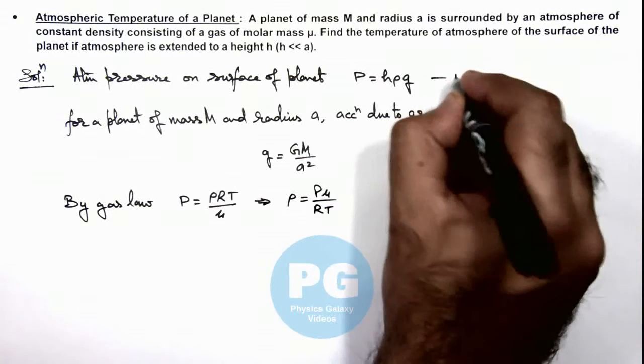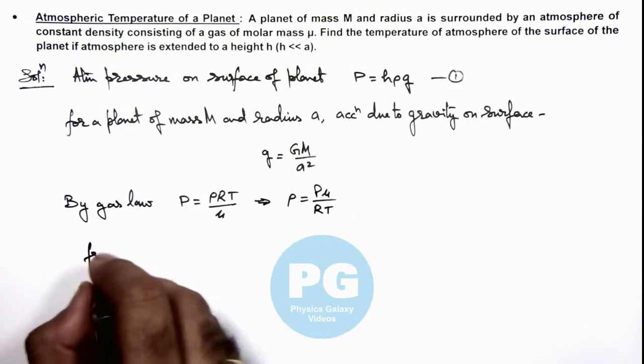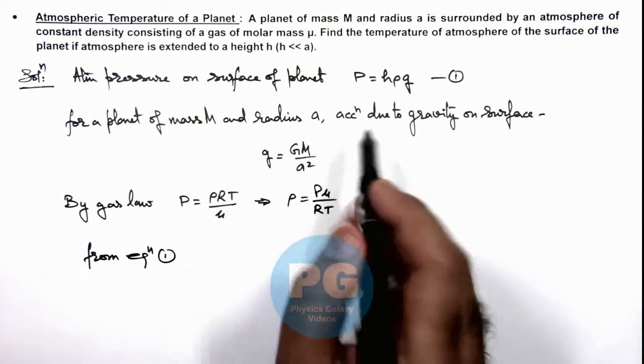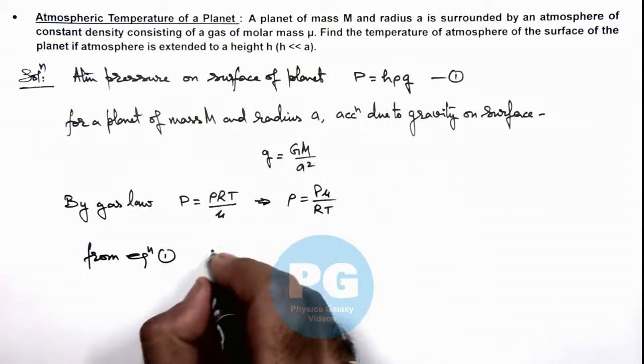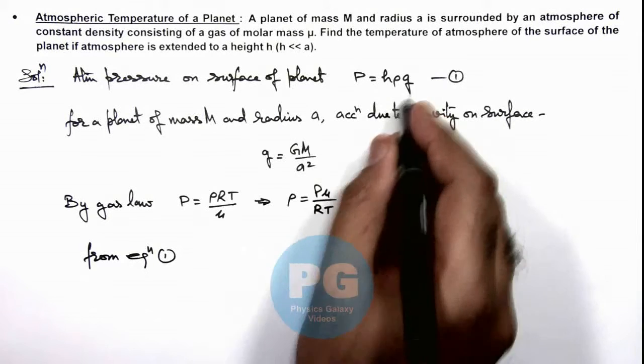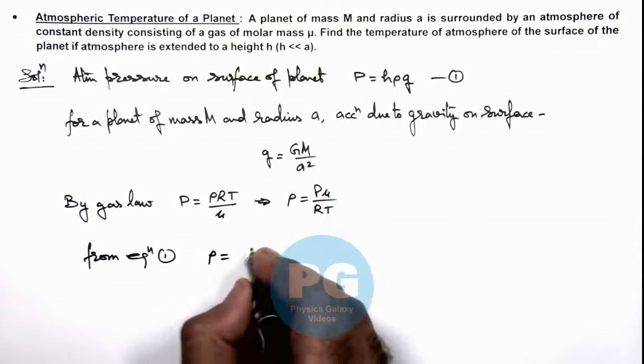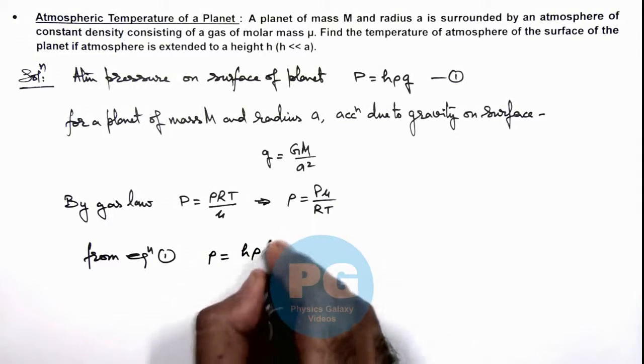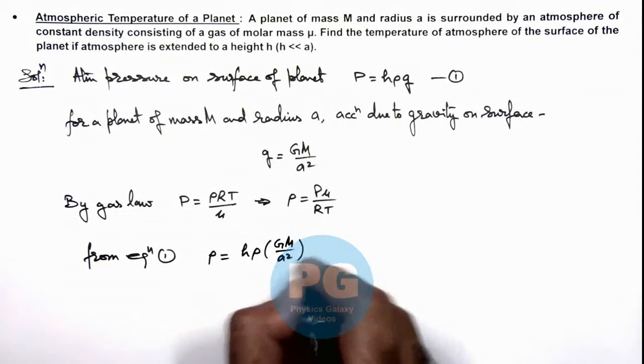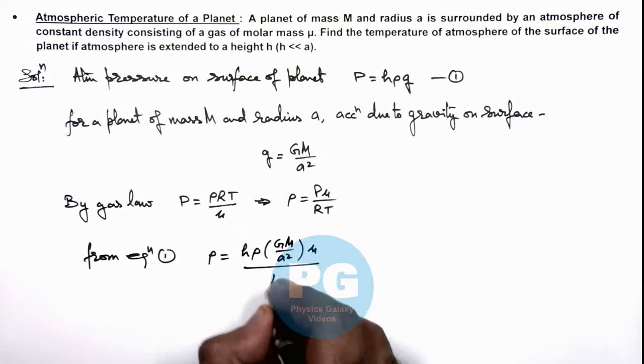So if this is our relation 1, then we can write from equation 1 the value of gas pressure as P = hρg. So here the value of ρ we can write as Pμ/RT, and g we can substitute as GM/a², multiplied by μ, divided by RT.